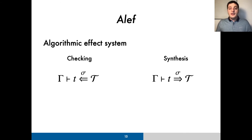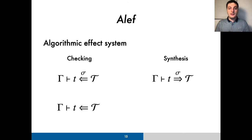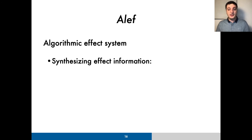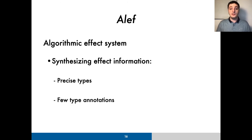We derive an additional checking judgment that does not allow any further effect variable instantiations. This judgment effectively closes all effect rows and is useful for checking annotated terms. This approach of synthesizing effect information through explicit effect variable instantiations makes our system's types very precise while requiring few type annotations, which are generally only needed for top-level declarations.